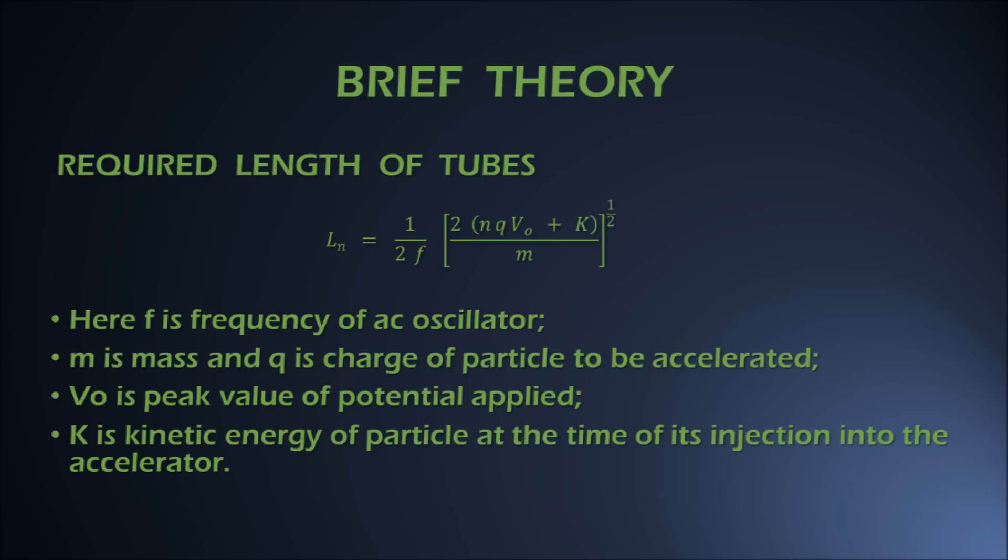In this relation, F is the frequency of connected AC oscillator, m is the mass of the charged particle, and q is the charge of the particle. V0 is the peak value of the potential applied. K stands for kinetic energy of the particle at the time of its injection into the accelerator.